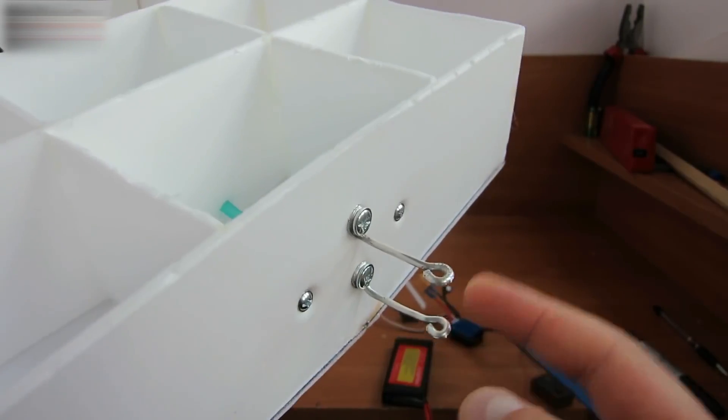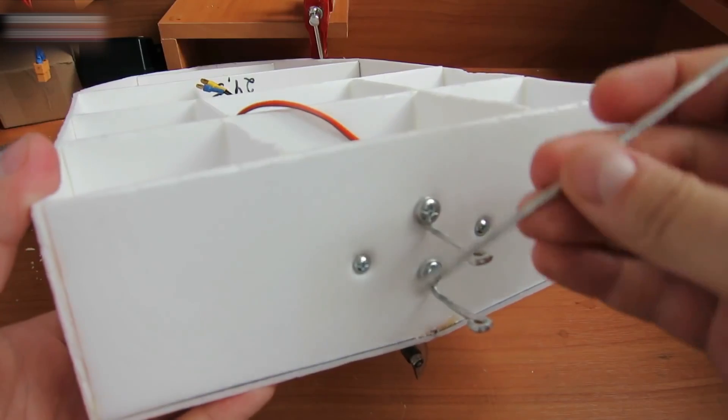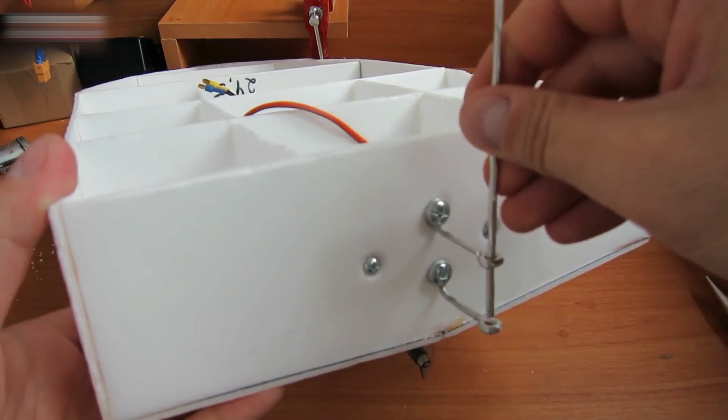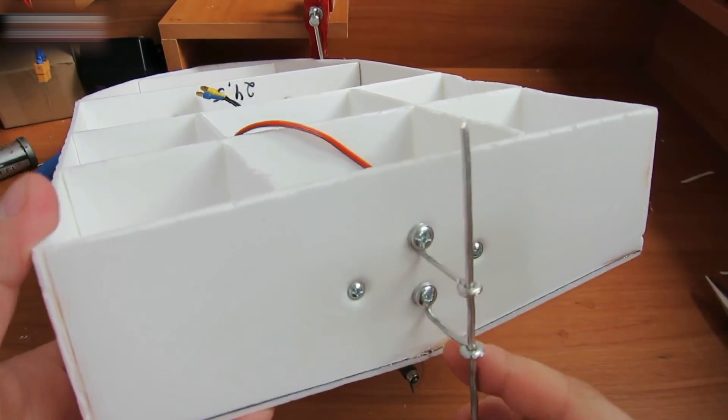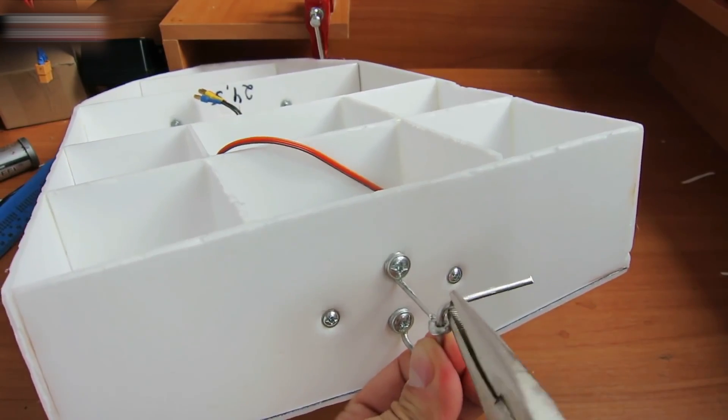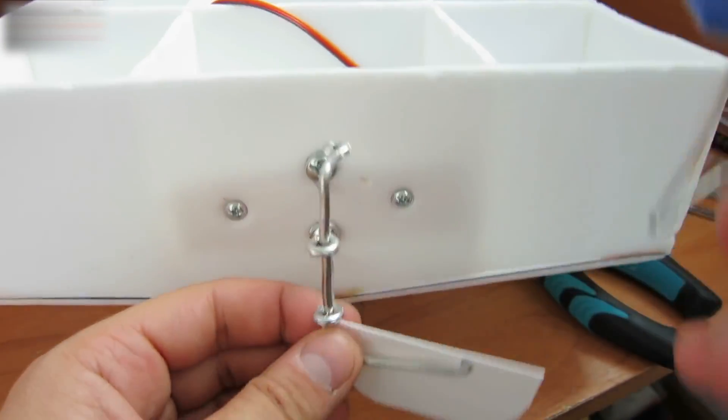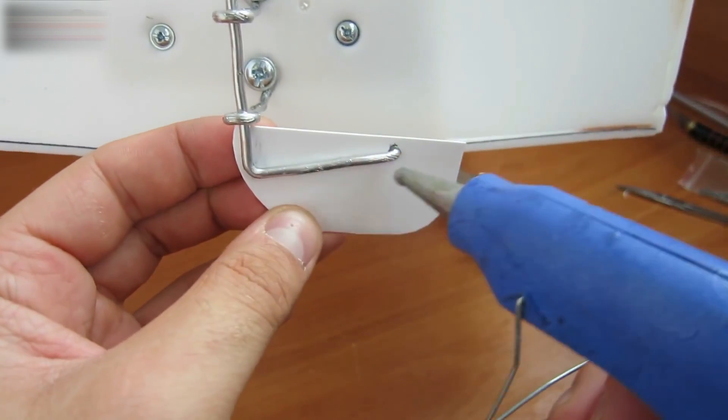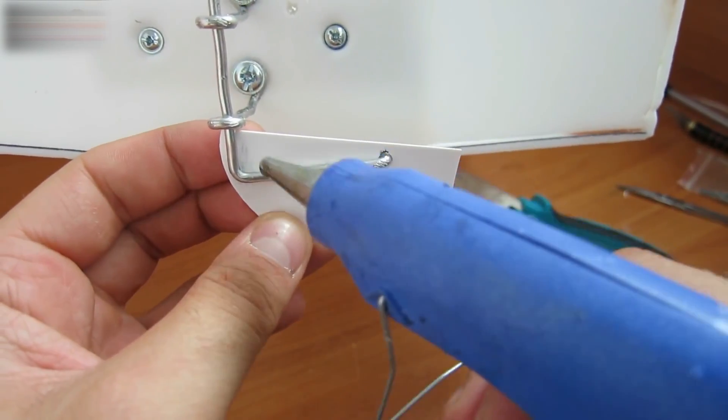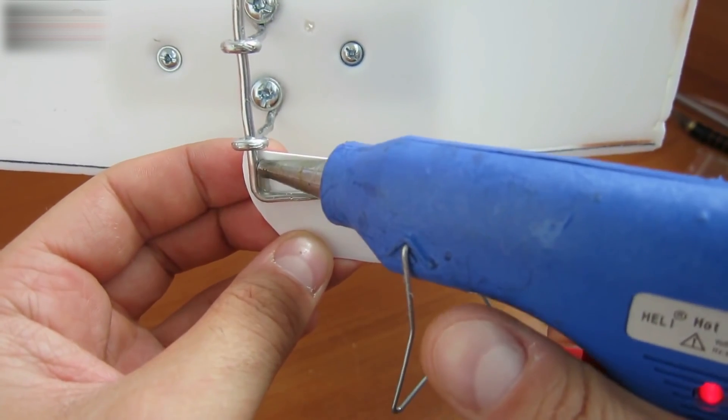Let's make the rotation system. First, insert two wires and bend them. Take another piece of wire and insert it through the holes, then bend it. Make a small ring here and bend the wire. Then, attach the plastic with the glue gun to form a rudder.